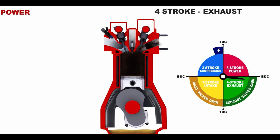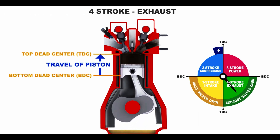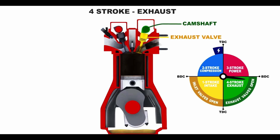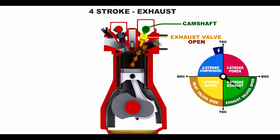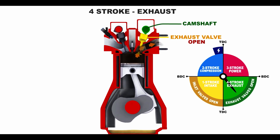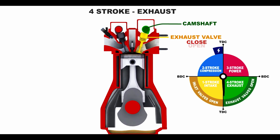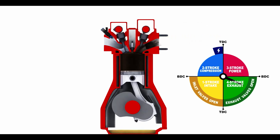The fourth stroke starts at bottom dead center and ends at top dead center. The camshaft opens the exhaust valves, and the piston expels the exhaust gases from the cylinder. When the piston approaches top dead center, the exhaust valves close, completing the last stroke — the exhaust — and the entire operation cycle. The operation cycle is then repeated.